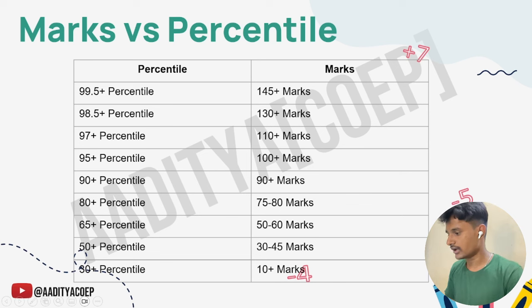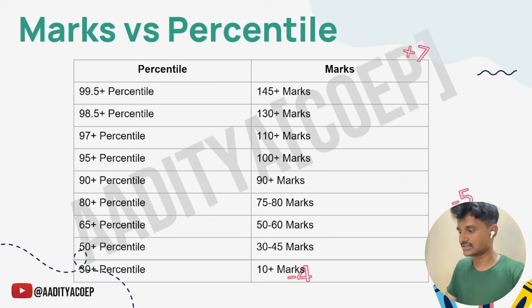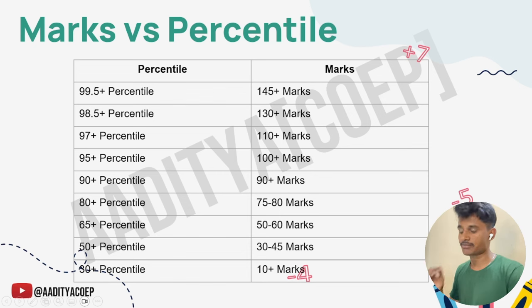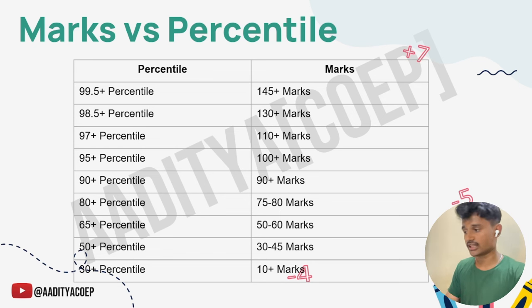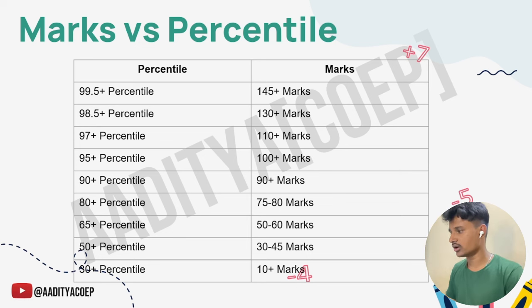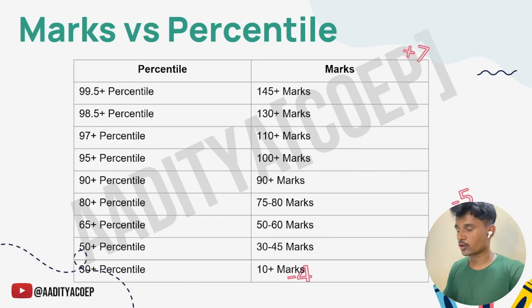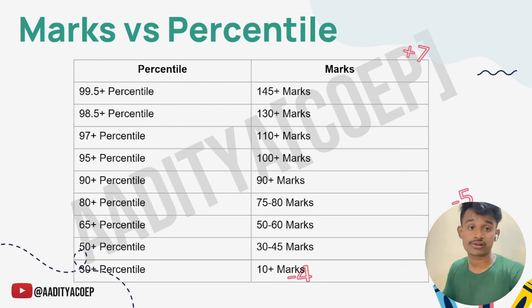Now the main content — marks vs percentile. If you score around 10+ marks, you can get 30+ percentile. For 30 to 45 marks, you can get 50+ percentile. For 55 to 60 marks, 65+ percentile is possible. For 75 to 80 marks, you can get 80+ percentile. If you score 90+ marks, you can get 90+ percentile. If your score goes to 100+, your percentile can reach 95+. If you score 110+ marks, your percentile will be 95+. For 130+ marks, you can get 98.5+ percentile, and for 145+ marks, you can easily score 99.5 percentile.